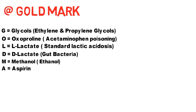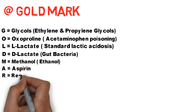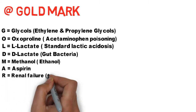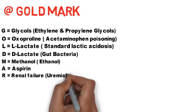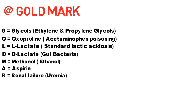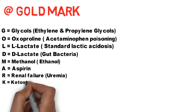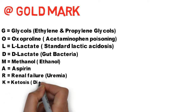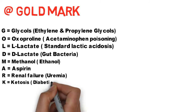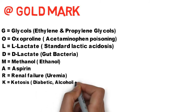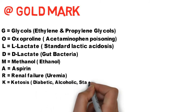R is for renal failure or uremia, and K is for ketosis, which can be due to diabetes, alcohol, or starvation.